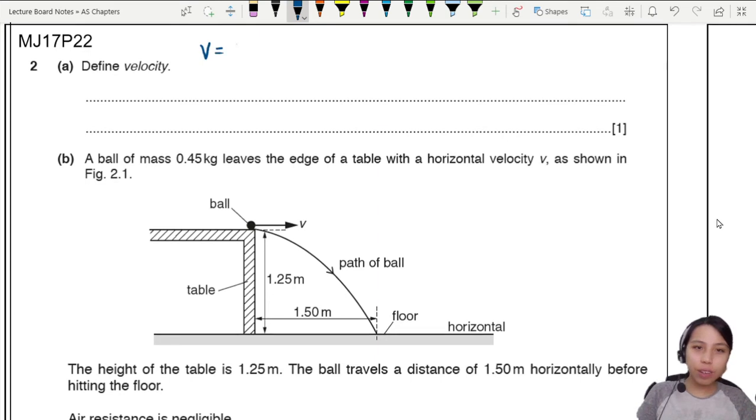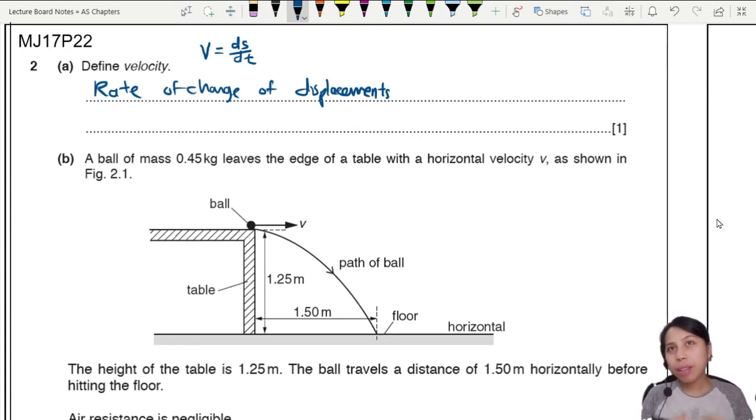Velocity you need to remember is a rate of change of displacement. So actually the best answer you can give here is to say that this is the rate of change of displacement. Sometimes the marking will allow displacement over time, displacement per unit time, but those are very dangerous answers because sometimes they may reject it as well. So stay safe, play safe. Rate of change of displacement. No S, just displacement. This one is going to be a B1 mark.